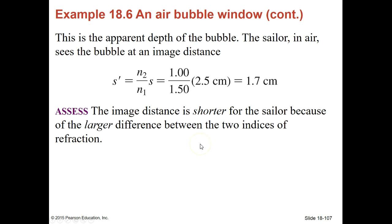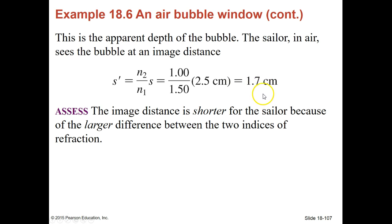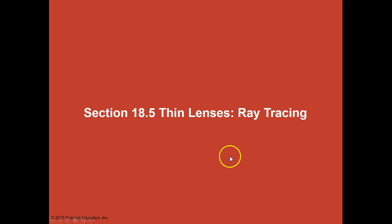The sailor in the air sees the bubble at an image distance that's a little bit different. Here we're going to use the index of refraction of air — so that's where the sailor is — versus where the bubble is, which is N1, and that's 1.5 because it's in the glass. If we divide the two and then multiply times that object distance, we end up with an image distance of 1.7 centimeters. So the image distance is shorter for the sailor because of the larger difference between the two indices of refraction. The bigger the difference between the two, the more magnification that you'll get.